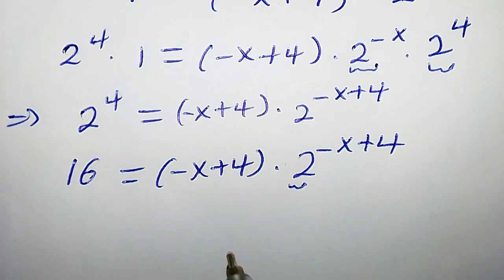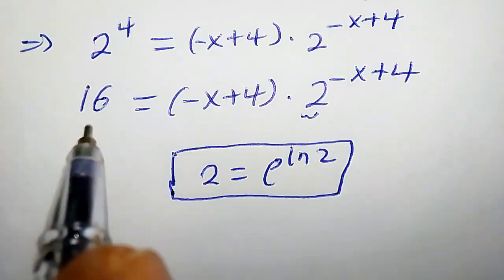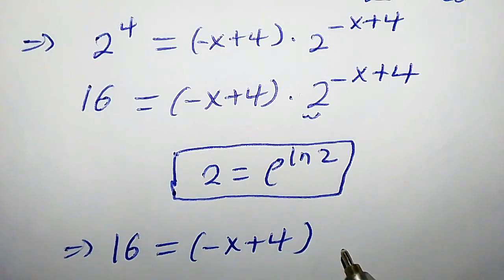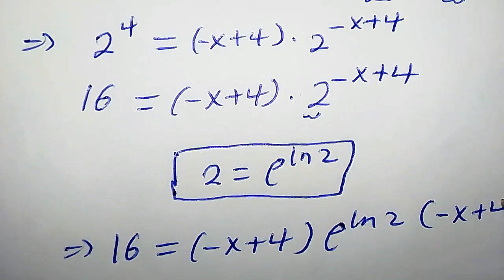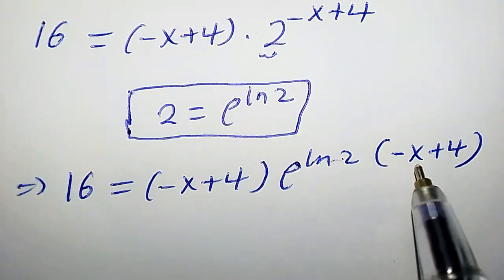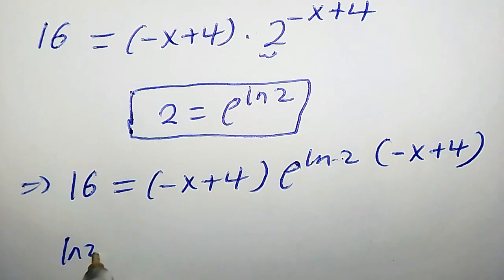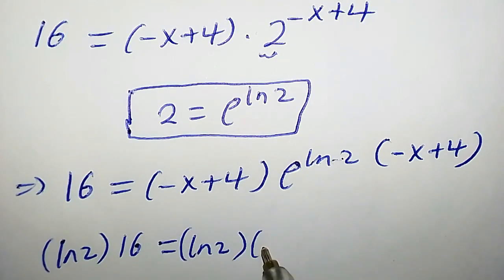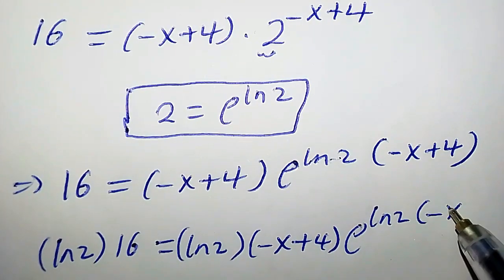Don't forget that we can write 2 as e to the power of ln 2. Take note of this. So from here we're going to have 16 equals negative x plus 4 times e to the power of ln 2, replacing 2 with e to the power of ln 2, times negative x plus 4.